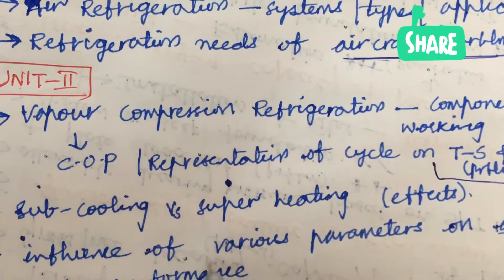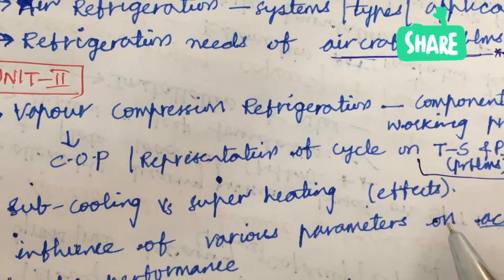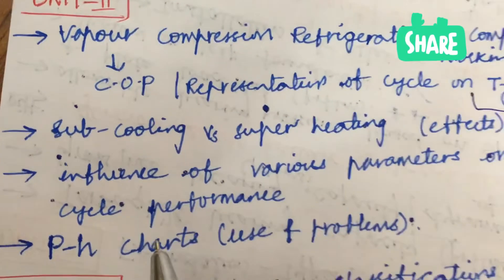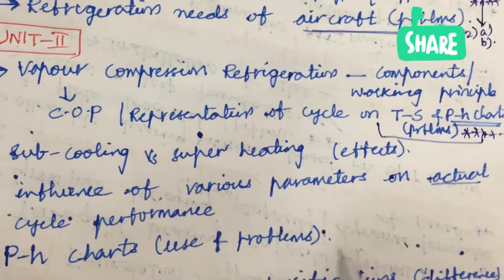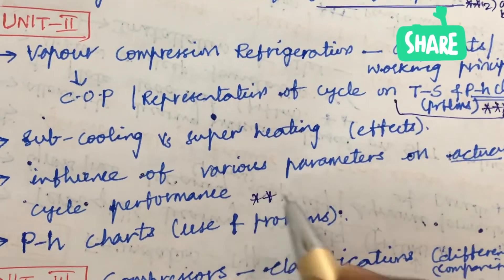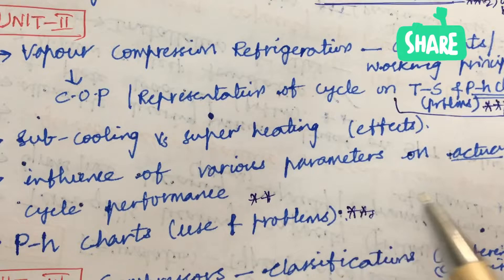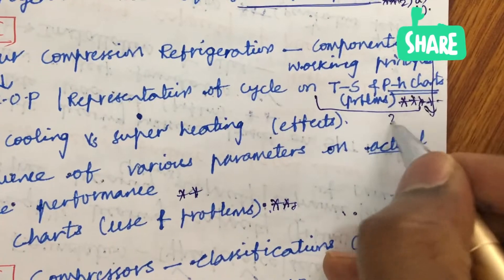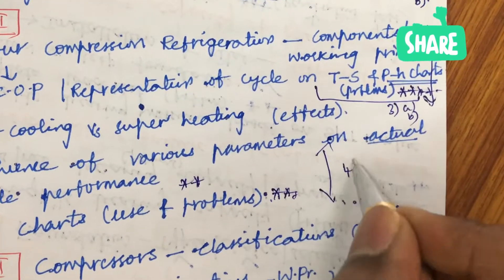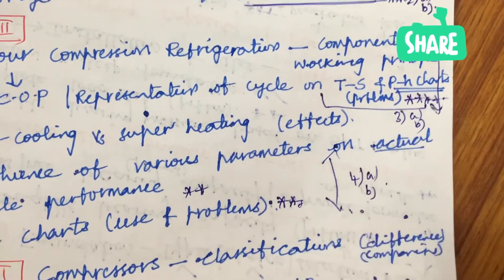Later, sub-cooling versus super-heating. You are supposed to work out its effects also and the differences of both. Later, the influence of various parameters on actual cycle performance is also one of the gunshot questions and the problems related to P-H chart. Based on these concepts you will be getting one question, that is 3A as well as 3B, and based on these concepts you will be getting 4A as well as 4B.